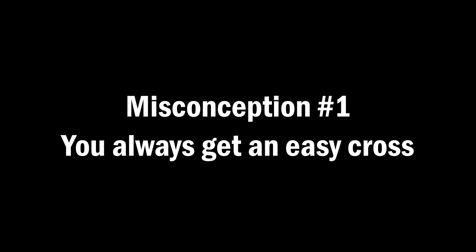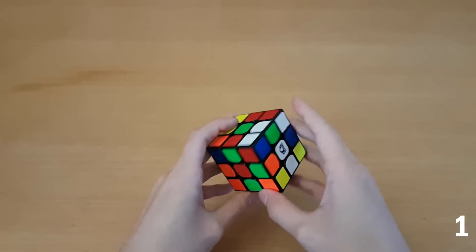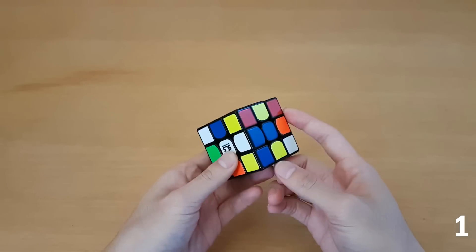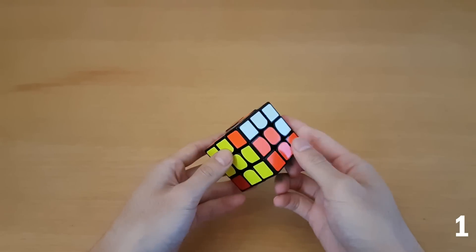So now with that out of the way I'm gonna talk about a few misconceptions about color neutrality and some tips at the end. So number one is people think that you always get an easy cross if you're color neutral. You get easy crosses often enough but that's not always true. This one, yeah this one is not that easy. Like the finger tricks were not very nice for this one. I guess it was kind of an easy solution to come up with but let's try another one.